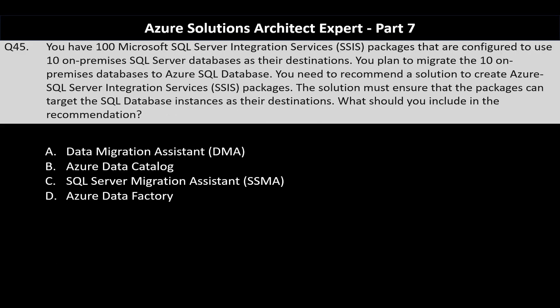Question number 45. You have 100 Microsoft SQL Server Integration Services — SSIS — packages configured to use 10 on-premise SQL Server databases as their destination. You plan to migrate the 10 on-premise databases to Azure SQL Database. You need to recommend a solution to create Azure SSIS packages that can target the SQL Database instances as their destinations. DMA is primarily used to assess and migrate on-premise databases to Azure SQL Database or SQL Server in Azure VMs; it does not handle SSIS package migration or execution, so it is an incorrect choice. Azure Data Catalog is a metadata management tool and does not execute or manage SSIS packages, so that is also incorrect.